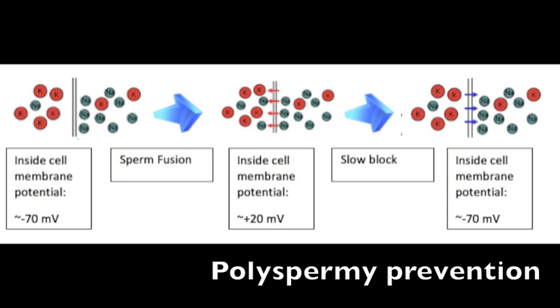At this positive charge, more sperm cannot enter into the egg because they are electrically repelled. This fast block happens roughly one to three seconds after sperm binding and lasts for a few minutes.